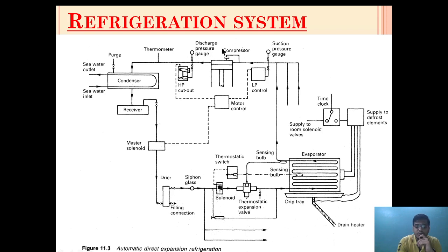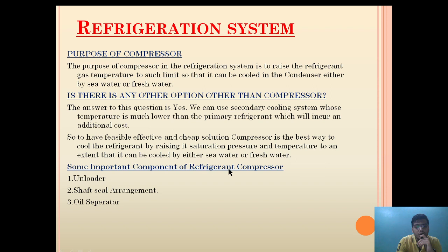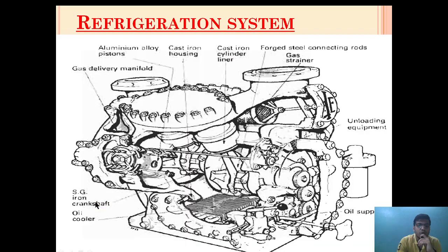Now let's see the components of the compressor. Some important components are the unloader, shaft seal, and oil separator. Today we will talk about the unloader, and in the next section we will see the shaft seal and oil separator arrangement. Now let's see the basic construction of a compressor. As you can see, this is a number of cylinder units — one, two, again two, means a four-cylinder unit. Here this is the oil cooler, this is the unloader element, this is the gas delivery manifold, this is the oil chamber, and this is the gas chamber.